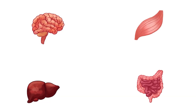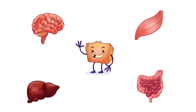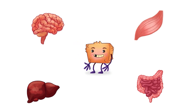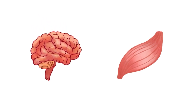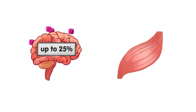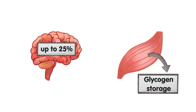All organs need sugar for energy production, but some are more dependent on it than others. The organs mainly dependent on sugar are the skeletal muscle and the brain. The brain consumes 20 to 25% of the sugar that we ingest every day. The glucose taken up into the muscle can also be stored as glycogen, but most of it is used as fuel for energy.